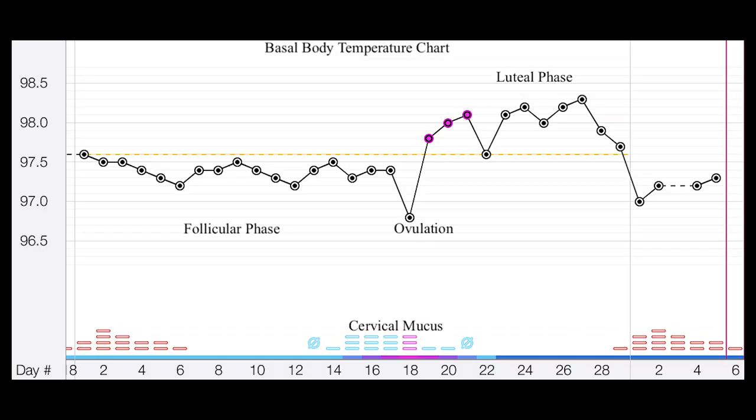You might be wondering where to start and how to understand what these signals mean. Cervical mucus quality and consistency is going to change as your estrogen rises throughout the follicular phase — it goes from lotion to watery to egg white. You notate that on the chart, and around the area that ovulation has occurred you'll notice annotations about what the cervical mucus looked like.